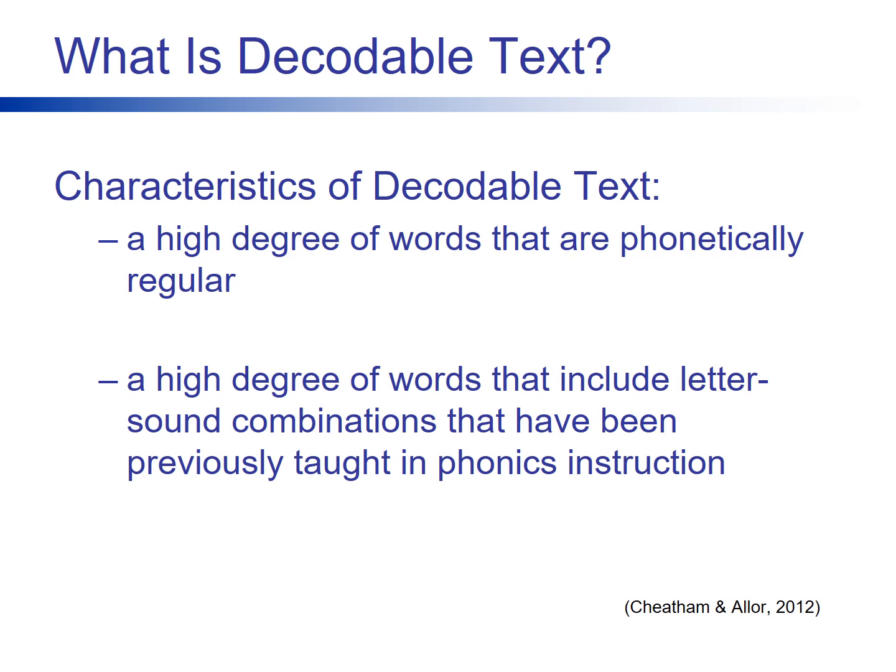Michael Hunter and Linda Farrell, literacy experts, mention these additional characteristics of decodable text: subject matter is secondary to decodability of the words; text should start with CVC words and move slowly to more complex spelling patterns, following a logical phonics scope and sequence; and the primary goal of decodable text is not necessarily comprehension, but repeated practice of phonics skills that students have learned and apply while reading connected text.